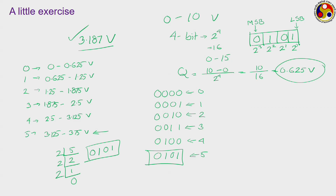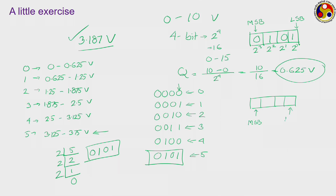If we think about a successive approximation ADC, how does it work? It starts from the most significant bit, whereas the digital ramp starts from the least significant bit. We have a register where this is the most significant bit and this is the least significant bit — sometimes called the second and third significant bits, but MSB and LSB are the more important terms.